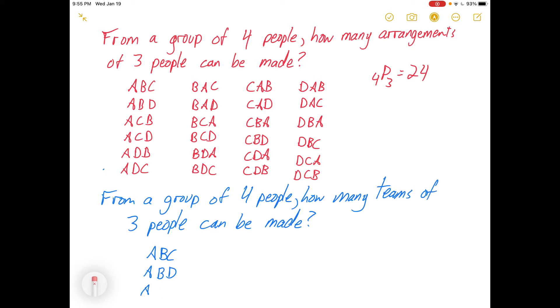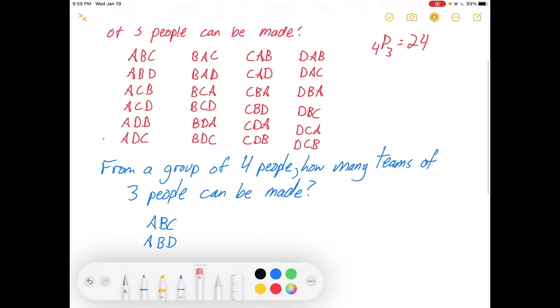So we could have ABC, ABD, we could have ACD, and we could have BCD. There are really only four different teams that we could have, because order doesn't matter.